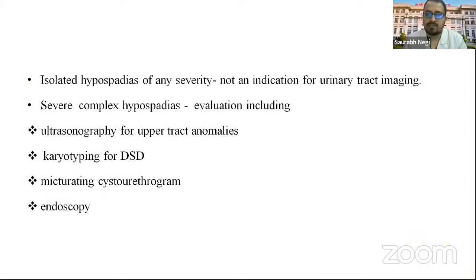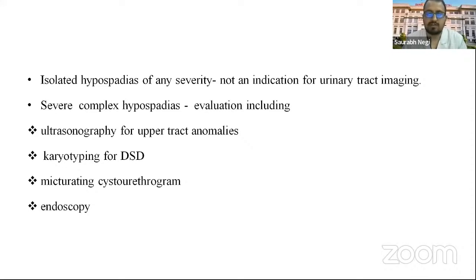Isolated hypospadias of any severity is not an indication for urinary tract imaging. Severe complex hypospadias needs evaluation including sonography for upper tract anomalies, karyotyping to rule out disorder of sexual differentiation, micturating cystourethrogram in case of vesicoureteric reflux, and endoscopy in case of prostatic utricle.